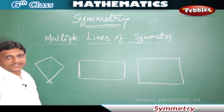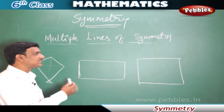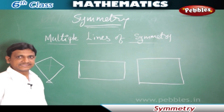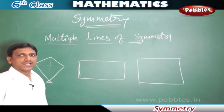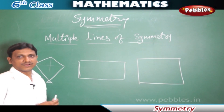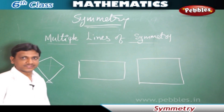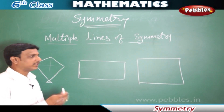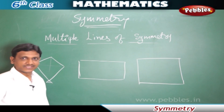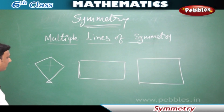Multiple lines of symmetry — till now we have seen examples in which there is only one line of symmetry, but for certain figures there are more than one line of symmetry. Now let us see this example.